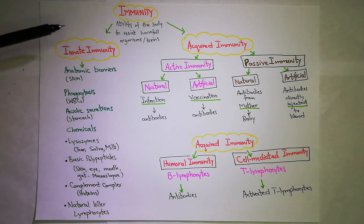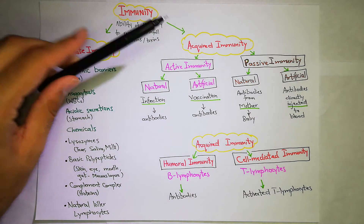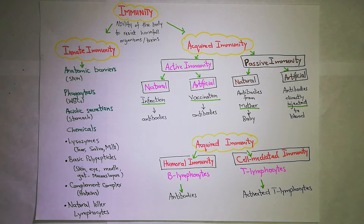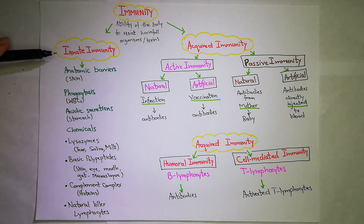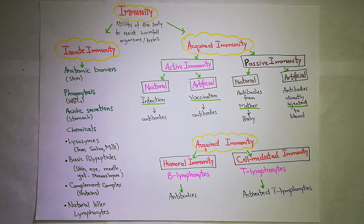Immunity is divided into two types: innate immunity and acquired immunity. Innate means something which is present before — it is present by birth, there is no need for any stimulus. Acquired means it is acquired after — it is an ability that is acquired in the body after some external stimulus.